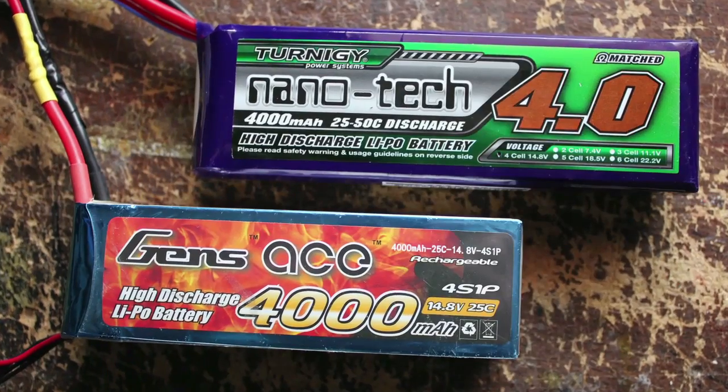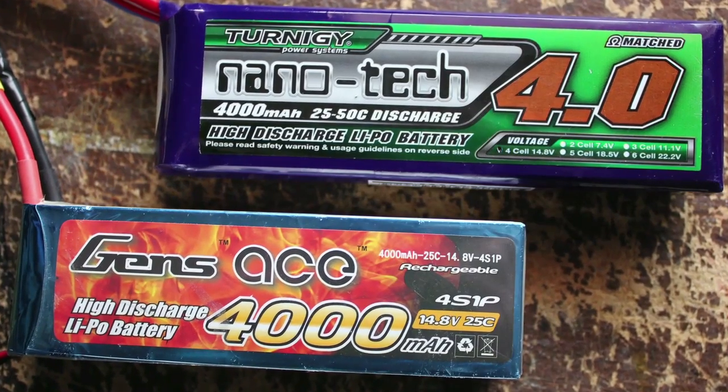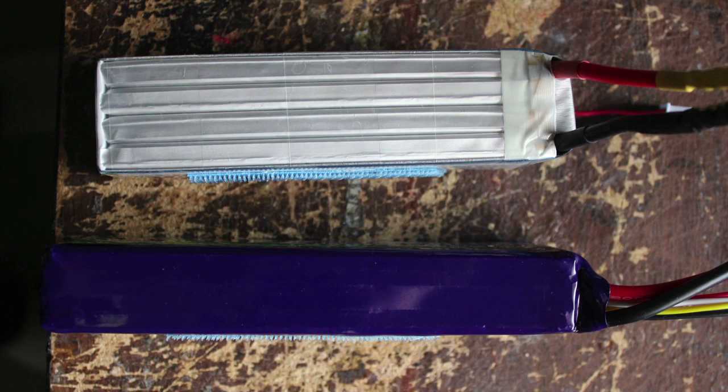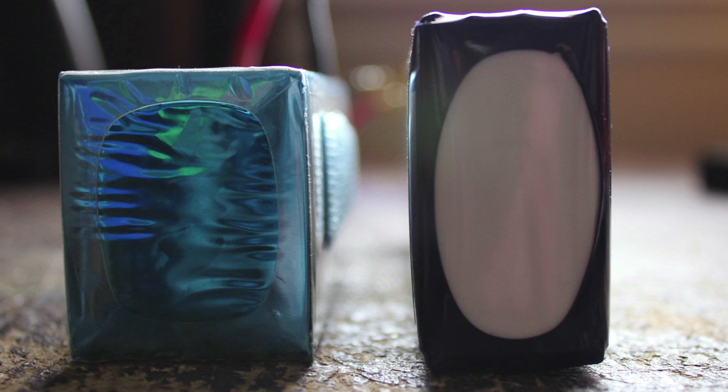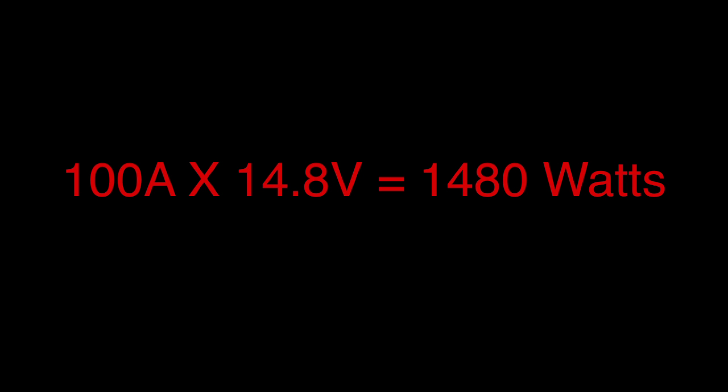Now we're going to test out the 4000 milliamp hour 4S 25c batteries. These both have the exact same specifications so we're just going to see if these batteries perform as advertised by the specifications on the label. The max amp draw of the battery is calculated by multiplying the c rating with the capacity, so 25c times 4 amp hours is equal to 100 amps. So these batteries should be able to have 100 amps pulled from them constantly.